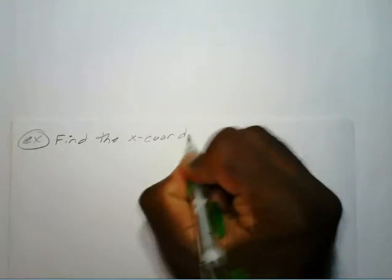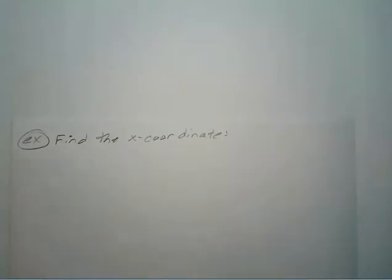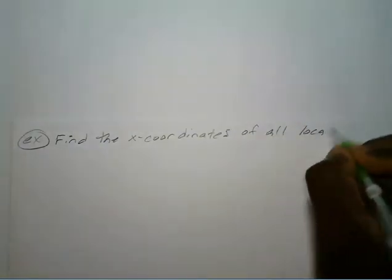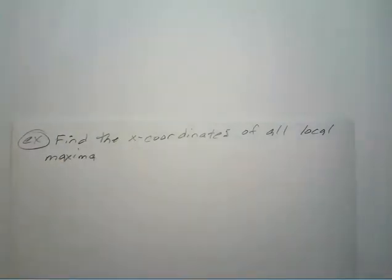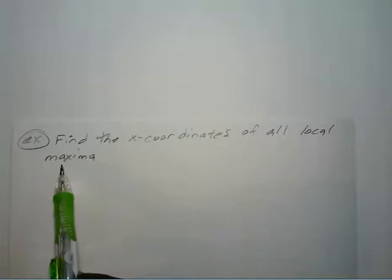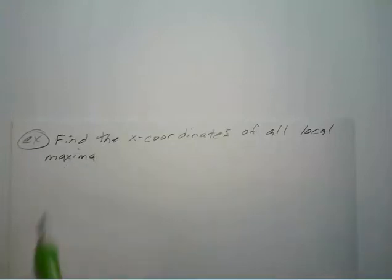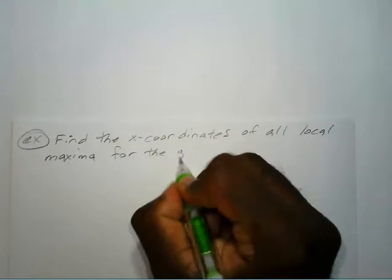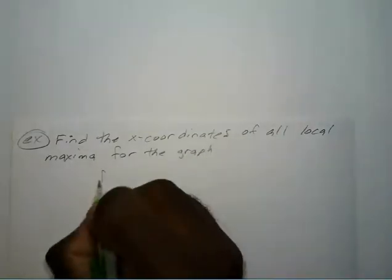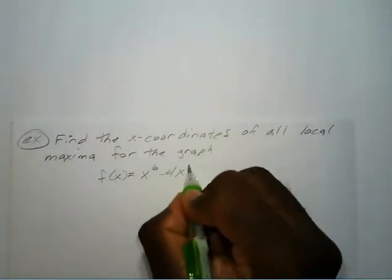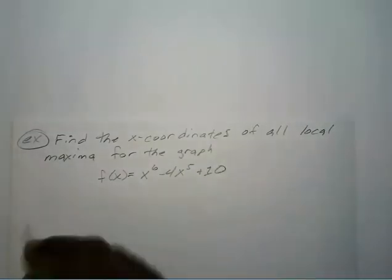What if we wanted to find the x-coordinates of all local maxima — and maxima just means local minimum and maximum, they mean the same thing — for the graph f of x equals x to the 6th power minus 4x to the 5th power plus 10, using the second derivative test?